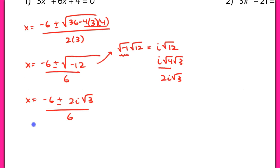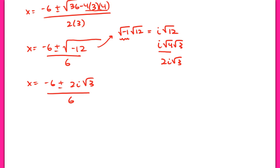The last thing you need to do is always to make sure that you reduce and simplify your answer. We're going to get a simplified answer after we take out a 2 from each of these terms of negative 3 plus or minus i root 3 over 3. There's my final answer for problem 1.